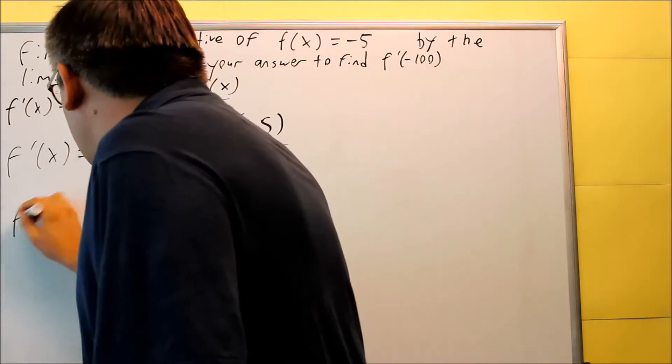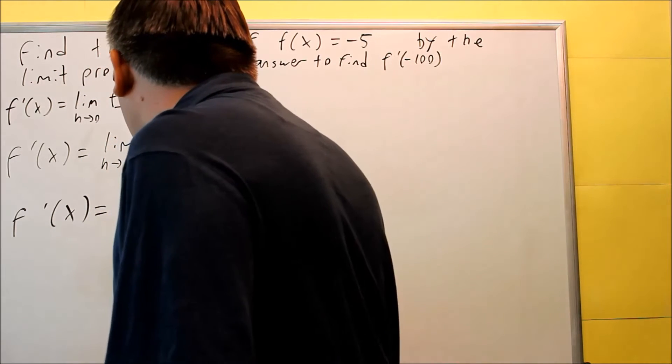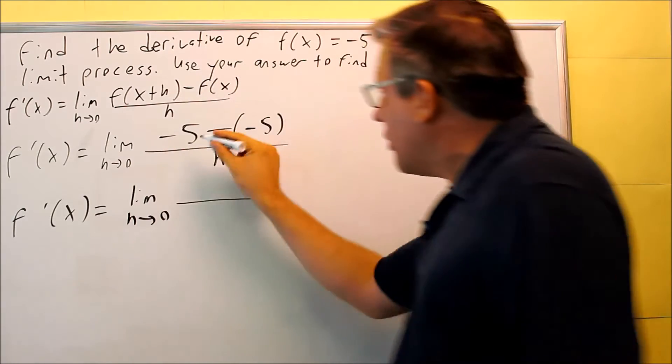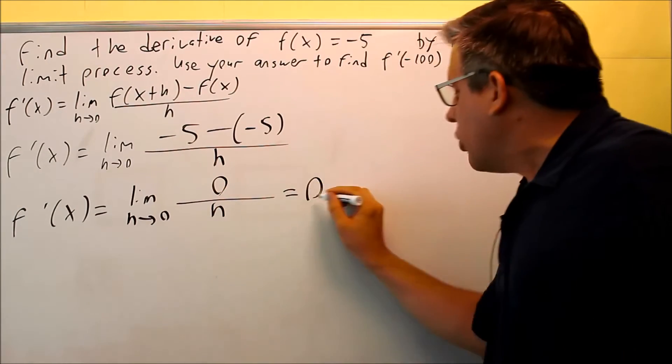When I simplify this, I'm going to get 0 on top. That's negative 5 plus 5, so I get 0 over h, which equals 0.